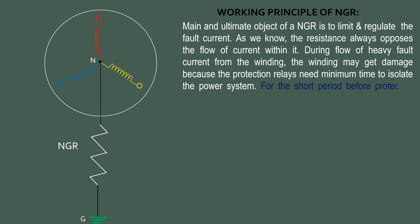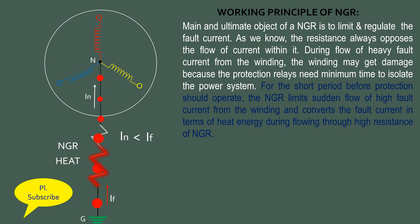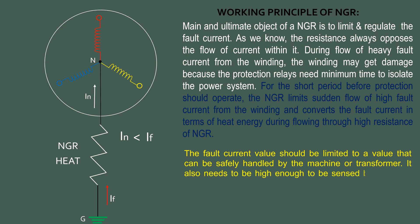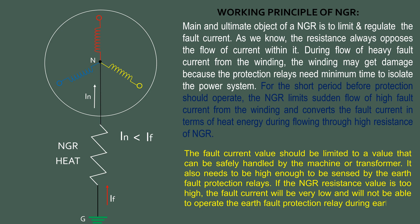For the short period before protection operates, the NGR limits the sudden flow of high fault current from the winding and converts the fault current into heat energy during its flow through the high resistance of NGR. The fault current value should be limited to a value that can be safely handled by the machine or transformer, but it also needs to be high enough to be sensed by the earth fault protection relays. If the NGR resistance value is too high, the fault current will be very low and will not be able to operate the earth fault protection relay during earth fault conditions.